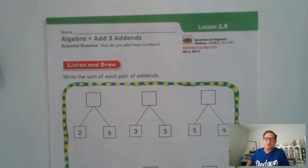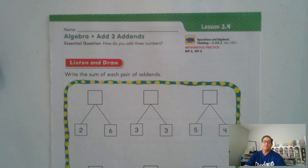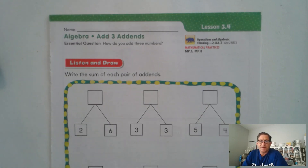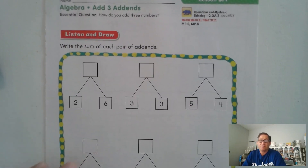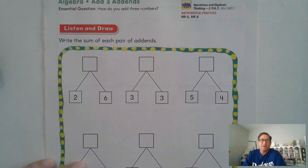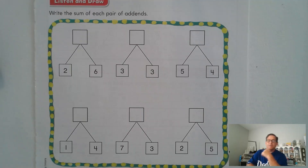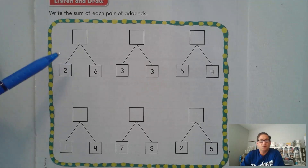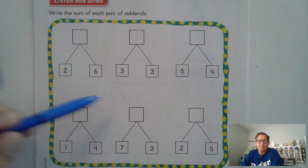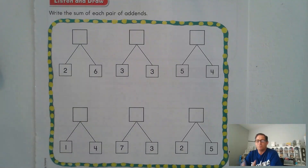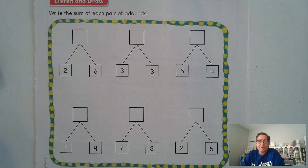Hello, everybody. Today we're going to continue with lesson 3.4, where we're going to talk about adding three addends. That simply means how do you add three numbers. Remember, addends are digits that we add together. I want you to go ahead and try to solve the problems first. Go ahead and write the sums in each of the boxes, and then we'll review your different ways that you solved those problems. Go ahead and pause the video and solve the problems.